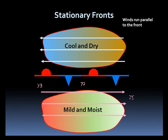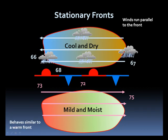The temperature change is not very large on either side of the front. Stationary fronts act much like a warm front, in the respect that clouds and possibly precipitation are favored on the cool side of the front.